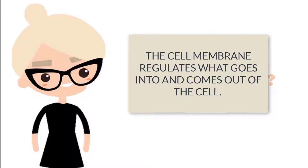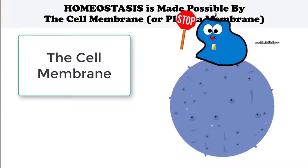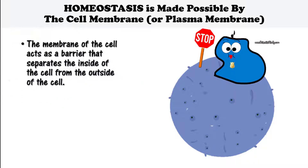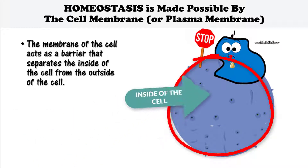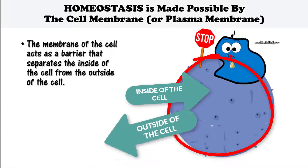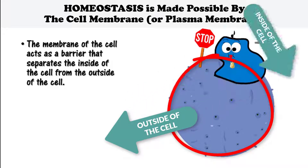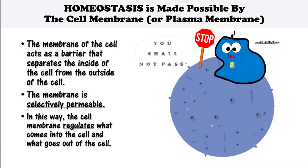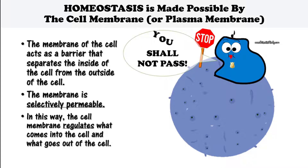How do cells maintain homeostasis? Homeostasis is made possible by the cell membrane or plasma membrane. The membrane of the cell acts as a barrier that separates the inside of the cell from the outside of the cell. The membrane is selectively permeable. In this way, the cell membrane regulates what comes into the cell and what goes out of the cell.